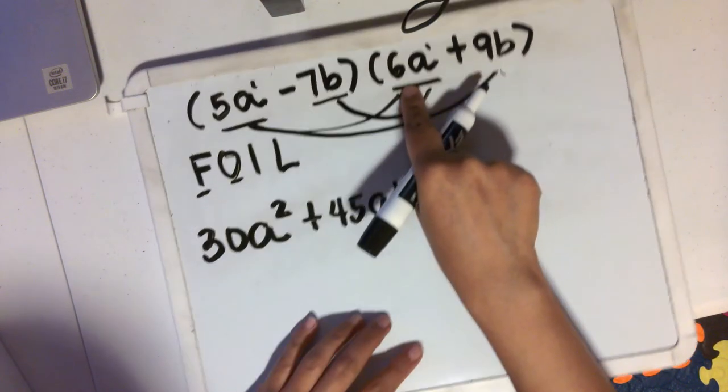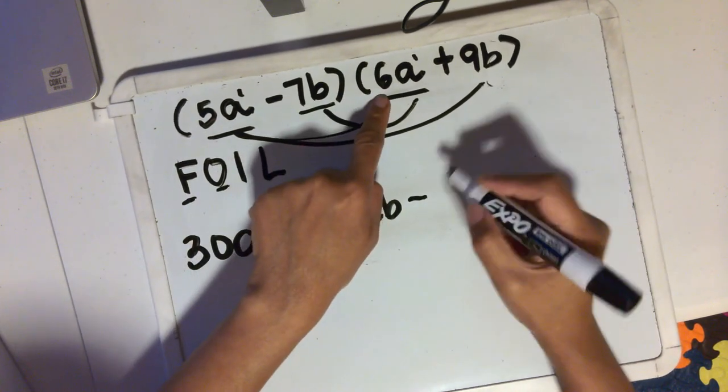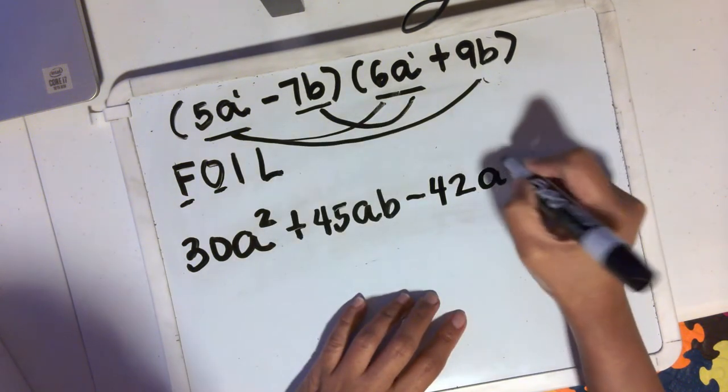This is negative, this is positive. So the result will be negative. 7 times 6 is 42, and b times a is the same as ab or ba.